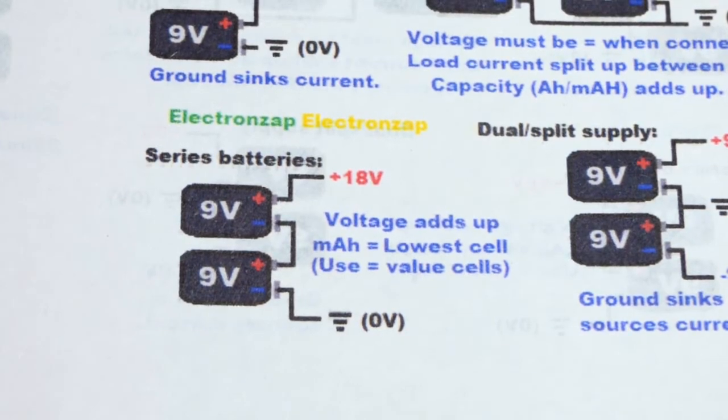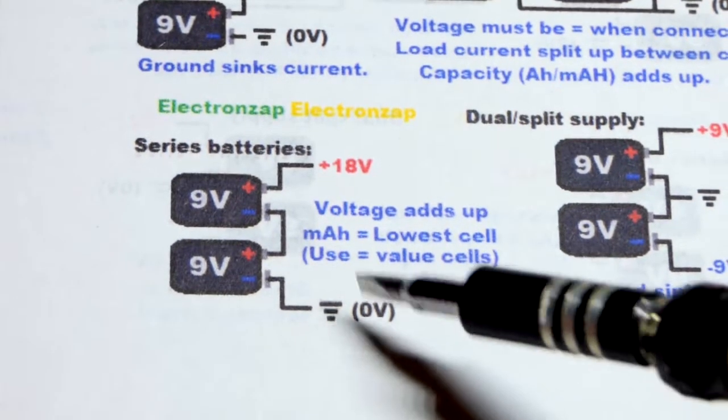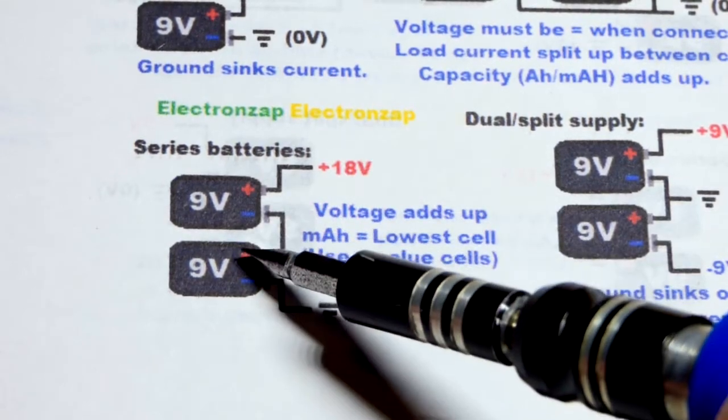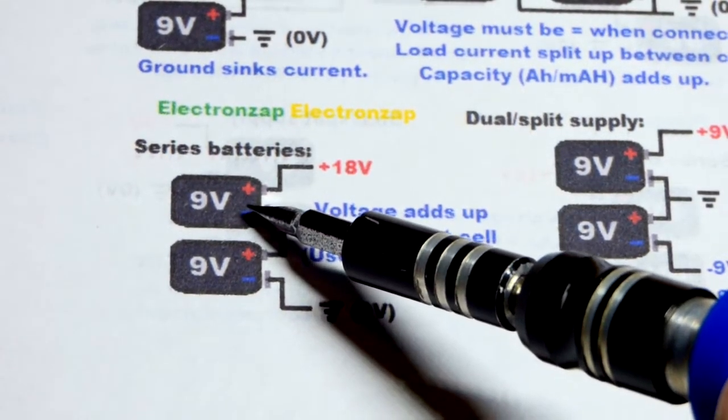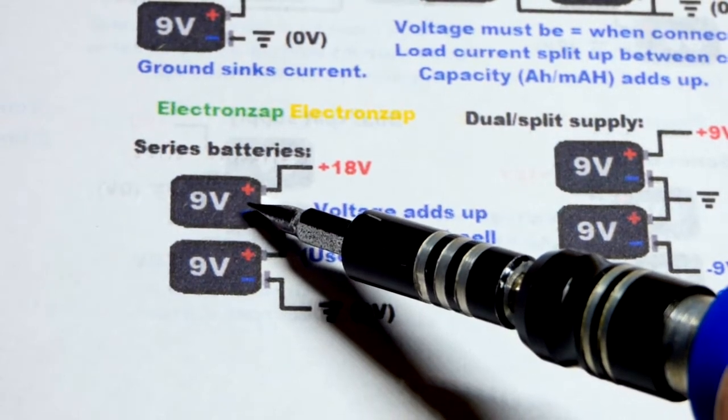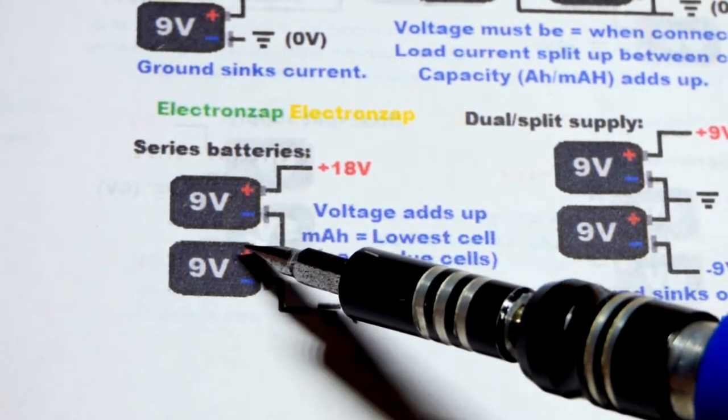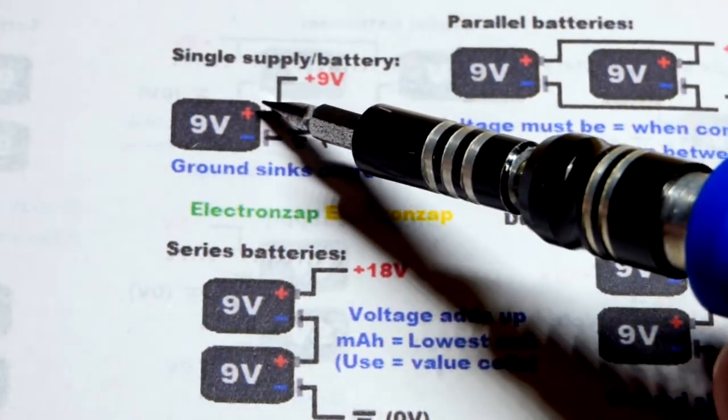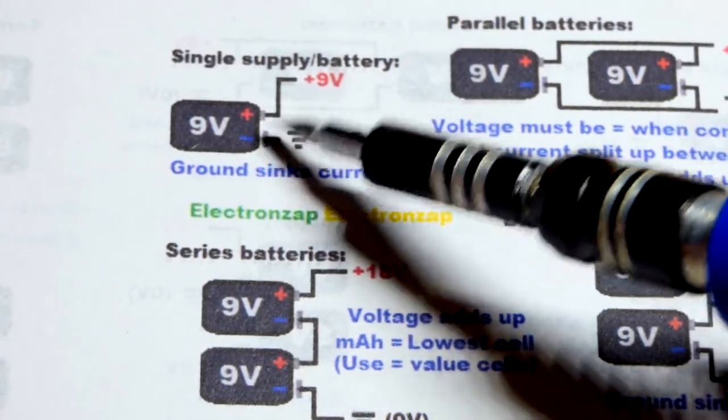If we need more voltage though, then what we can do is take two batteries, connect them in series. So we got positive of one to negative of the other one. Only do that while they're in series. Don't do that with a single battery.